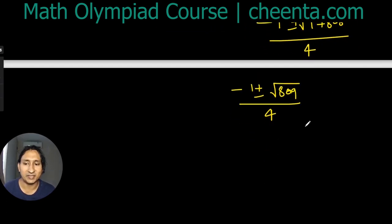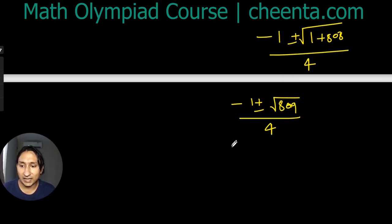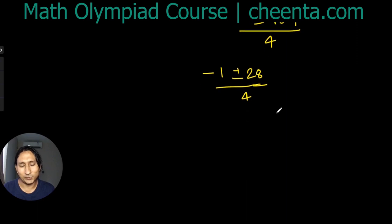Now √809 is actually between 28 and 29, it's 28 point something, that's easy to see. So the permissible values of n are more or less between (-1 ± 28)/4.